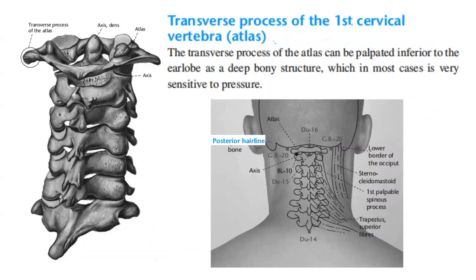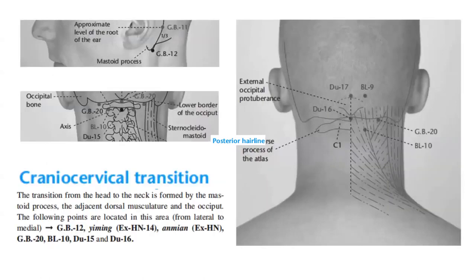Next, we have the transverse process of the first cervical vertebra. The transverse process of the atlas can be palpated inferior to the earlobe as a deep bony structure, which in most cases is very sensitive to pressure. Here we have an illustration showing the transverse process of the atlas, its axis, and other parts, as well as another illustration showing the different acupuncture points near this area.